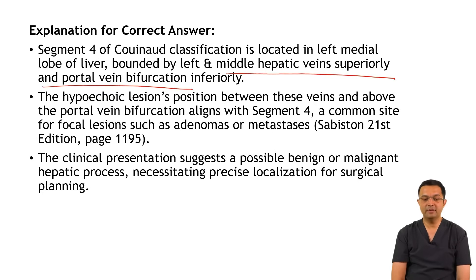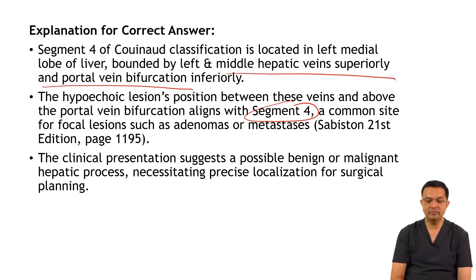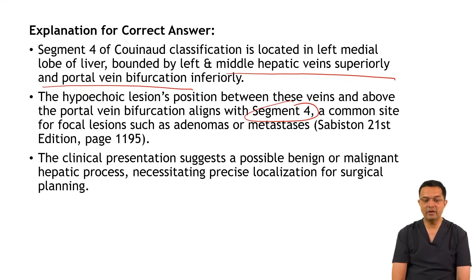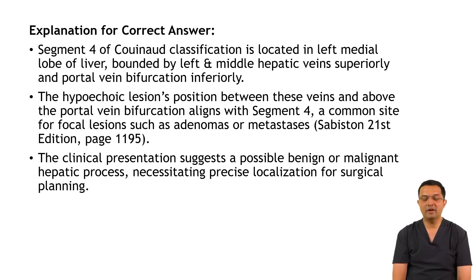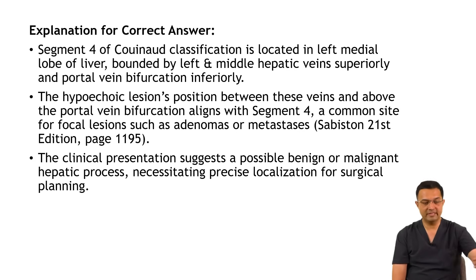Segment 4 is between the left and middle hepatic veins and above the portal vein bifurcation. Hypoechoic lesions positioned between these veins and above the portal vein bifurcation align with Segment 4, and this can be a site of focal lesions such as adenomas and metastases. The clinical presentation suggests the possibility of either a benign or malignant hepatic lesion, necessitating precise localization for surgical resection.